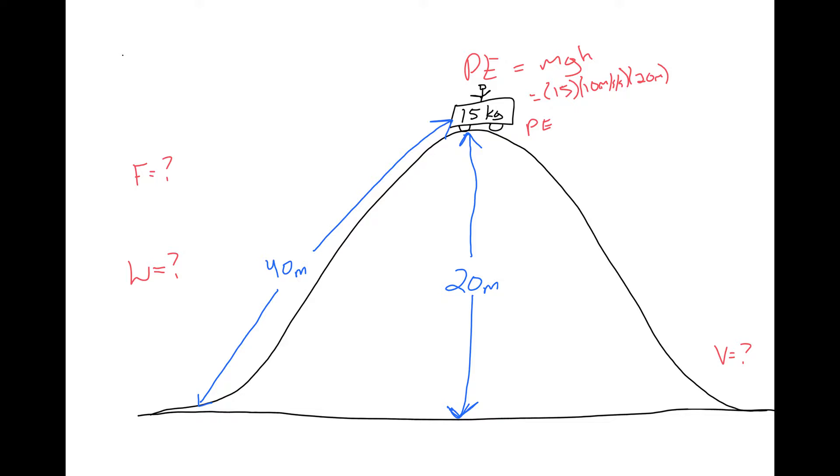So the potential energy, 15 times 10 is 150 times 20 is 3,000 joules. Energy is measured in joules. So potential energy equals 3,000 joules.